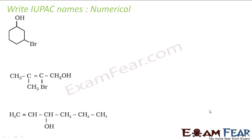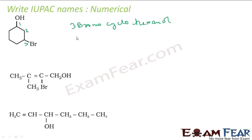I'll ask you to pause and try to solve things on your own, then tally the answers. Here OH is the primary group so numbering starts there: one, two. I should not number from the other side because that gives positions one and five, whereas one and three is better. At position three I have bromo; the ring is cyclohexane — one, two, three, four, five, six. The name is 3-bromocyclohexan-1-ol.